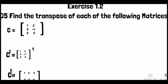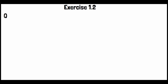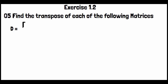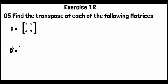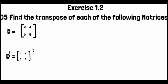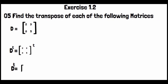Matrix D is [2, 3; 0, 5] with two columns. To find D transpose, we convert columns to rows. D^T equals [2, 0; 3, 5] — the first column [2, 0] becomes the first row and [3, 5] becomes the second row.